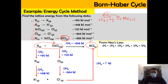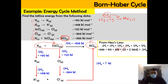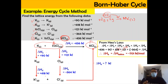We need to find delta H6. So we substitute: delta H1 is negative 436, H2 is 90, H3 is 121, H4 is 418, and H5 is negative 364. Solving for delta H6, which refers to the lattice enthalpy, gives a value of negative 701 kilojoule per mole. That's how you use the energy cycle method to find the lattice enthalpy.